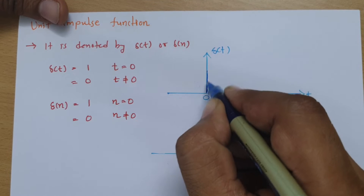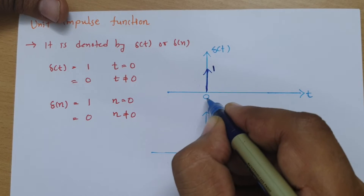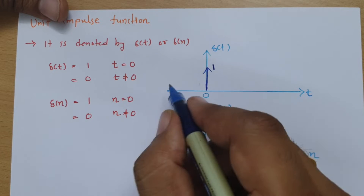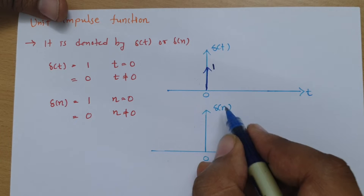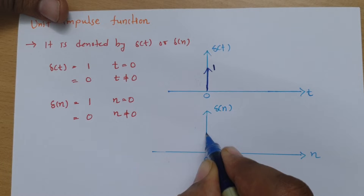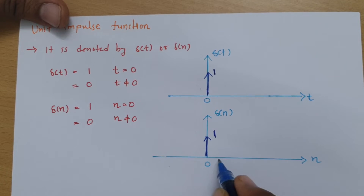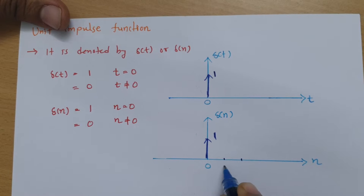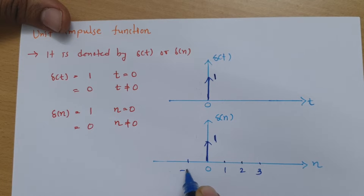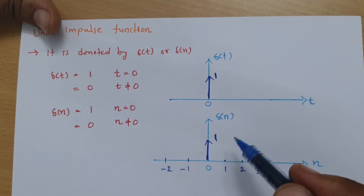When you see this graphically, it looks like an impulse with magnitude 1 at t = 0, and elsewhere it is 0. Similarly for δ(n), at n = 0 it will be 1, and for all other values it is 0. That is how it appears graphically.